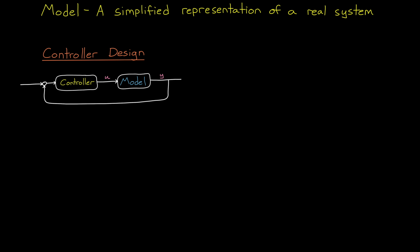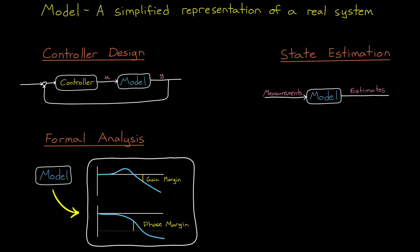For example, if you're designing a controller, we have lots of tools available that can help us find the optimal solution if we have a mathematical representation of the system, especially a linear representation. We can also combine the predictions from simple models with sensor measurements to improve state estimation or to predict when maintenance needs to occur. And we can use models to perform formal analysis in order to guarantee performance or safety.